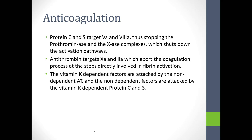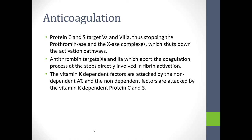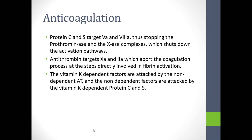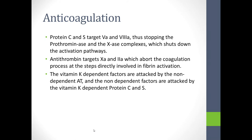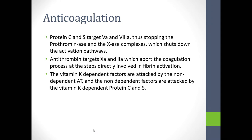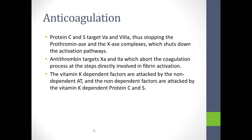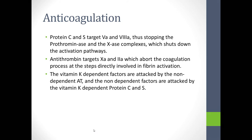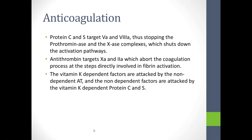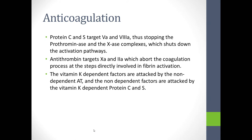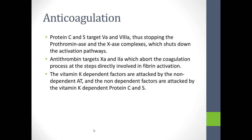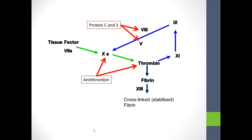Anticoagulation with protein C and S targets factor 5 and factor 8, stopping the prothrombinase and 10a complexes and shutting down activation pathways. Antithrombin targets 10a and 2a, which aborts at the fibrin activation stage. A helpful memory aid: vitamin K dependent factors are attacked by non-vitamin K dependent antithrombin, and the non-vitamin K dependent factors are attacked by the vitamin K dependent protein C and S.